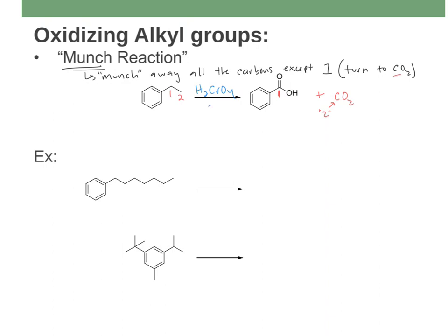Chromic acid is a chromium-6 species, which is a toxic heavy metal — carcinogenic and an environmental hazard. So you could also use KMnO4 followed by an acid workup, usually done in base with heat. The manganese in potassium permanganate is not nearly as toxic as chromium. Either one will work. The key is that you munch away all the carbons except one, and you need at least one benzylic hydrogen — that's what's critical here.